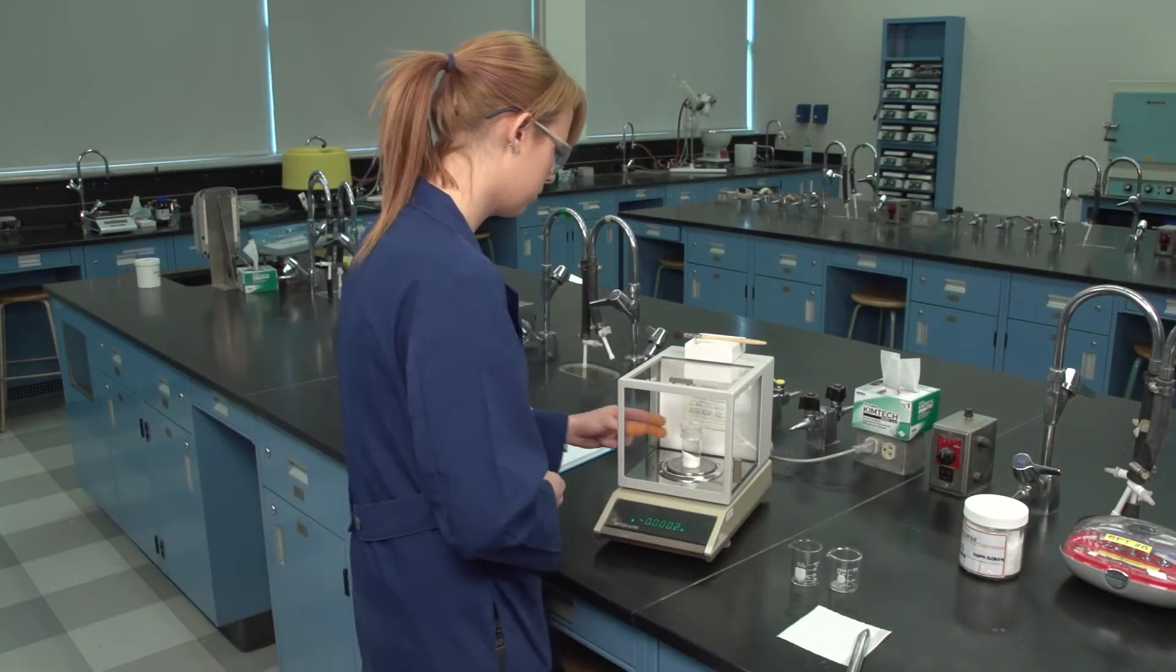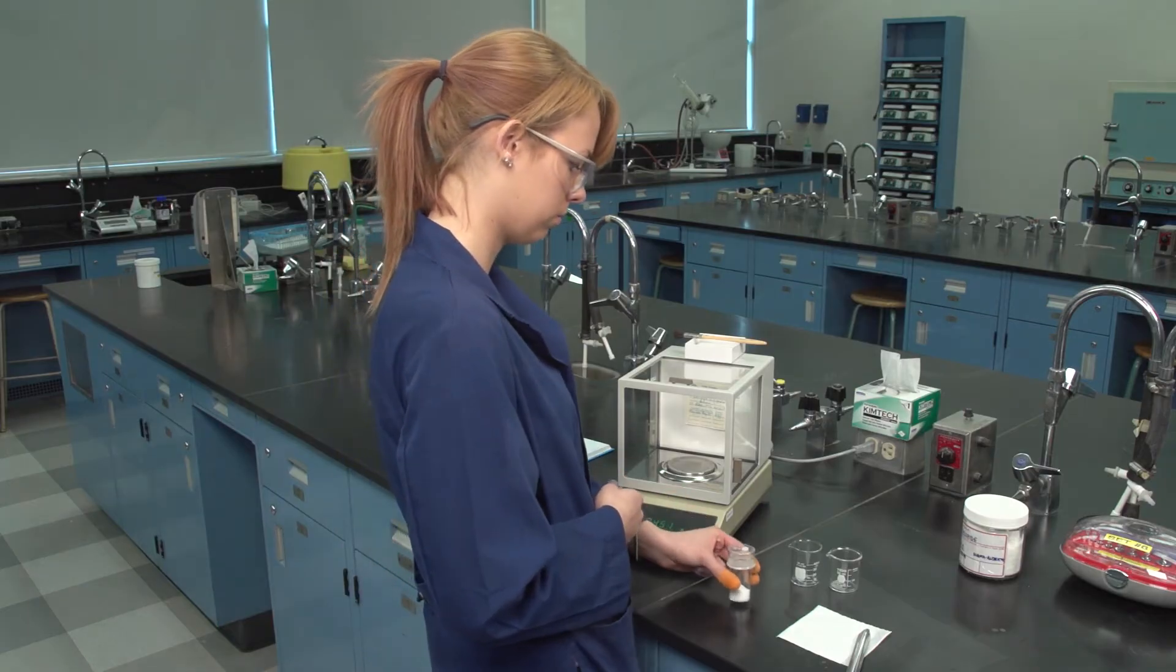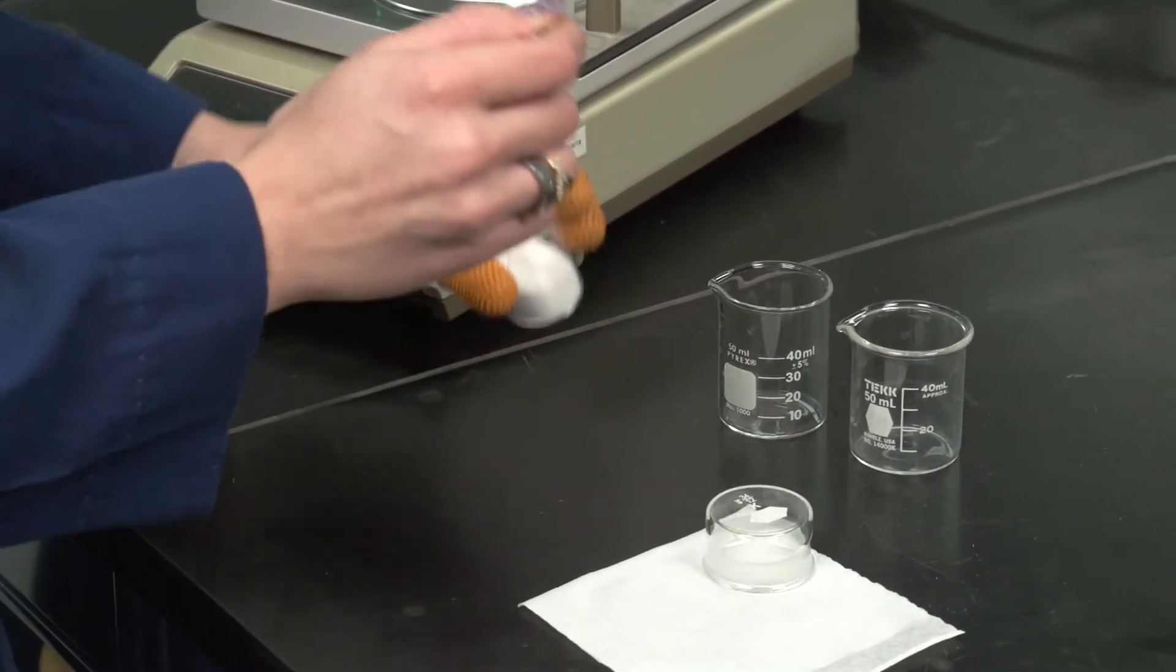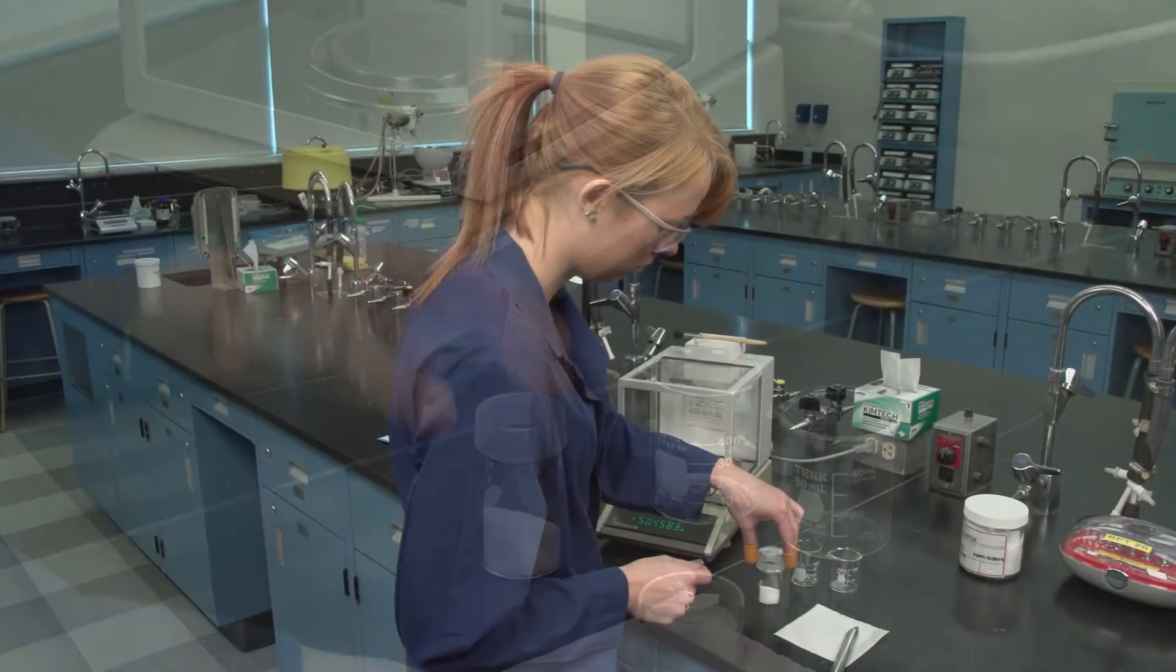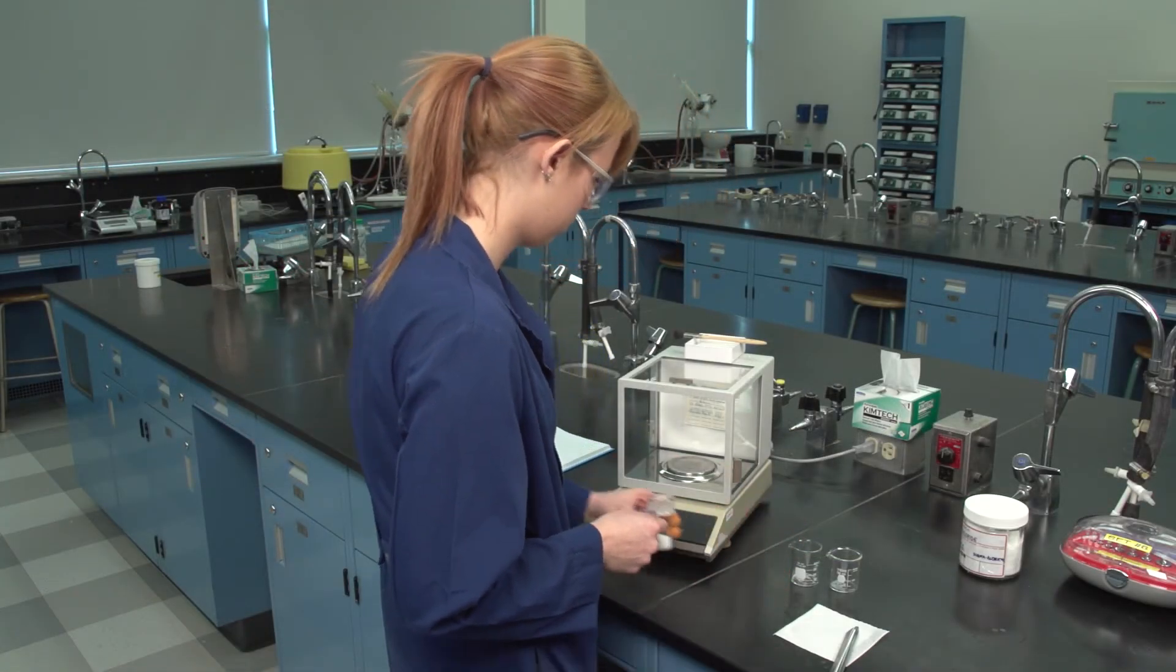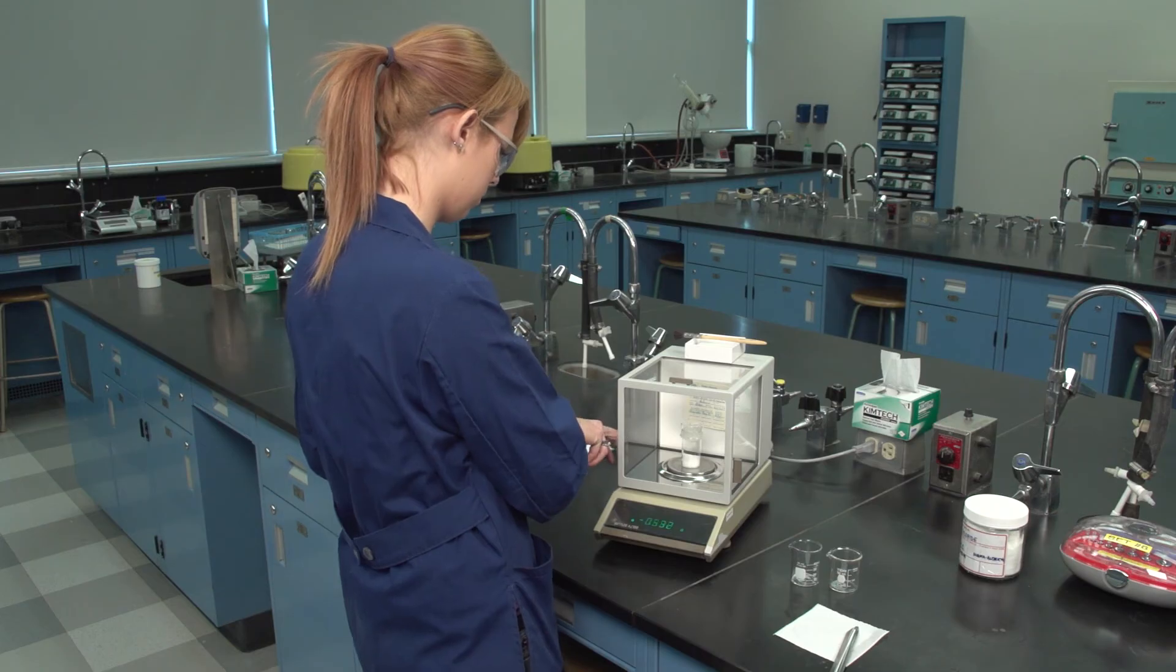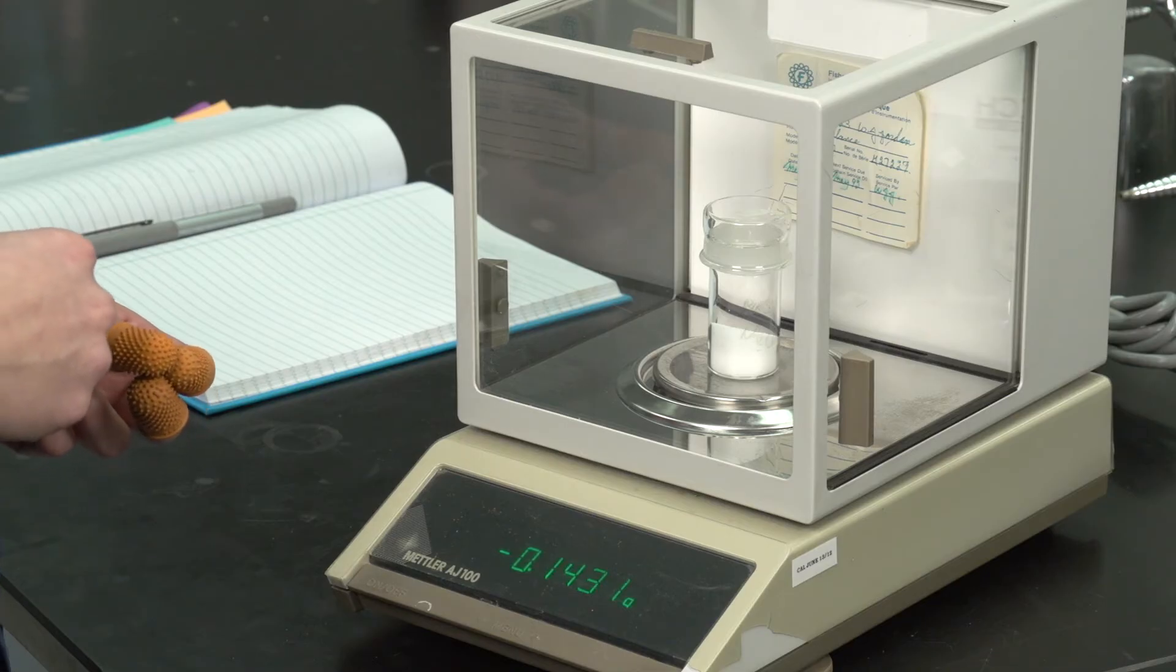Remove the weighing bottle from the balance. Remove some sample with a spatula and transfer to a receiving vessel. Return the weighing bottle to the balance pan and allow the balance to equilibrate. The negative value indicated on the balance readout is the actual mass placed into the receiving vessel.